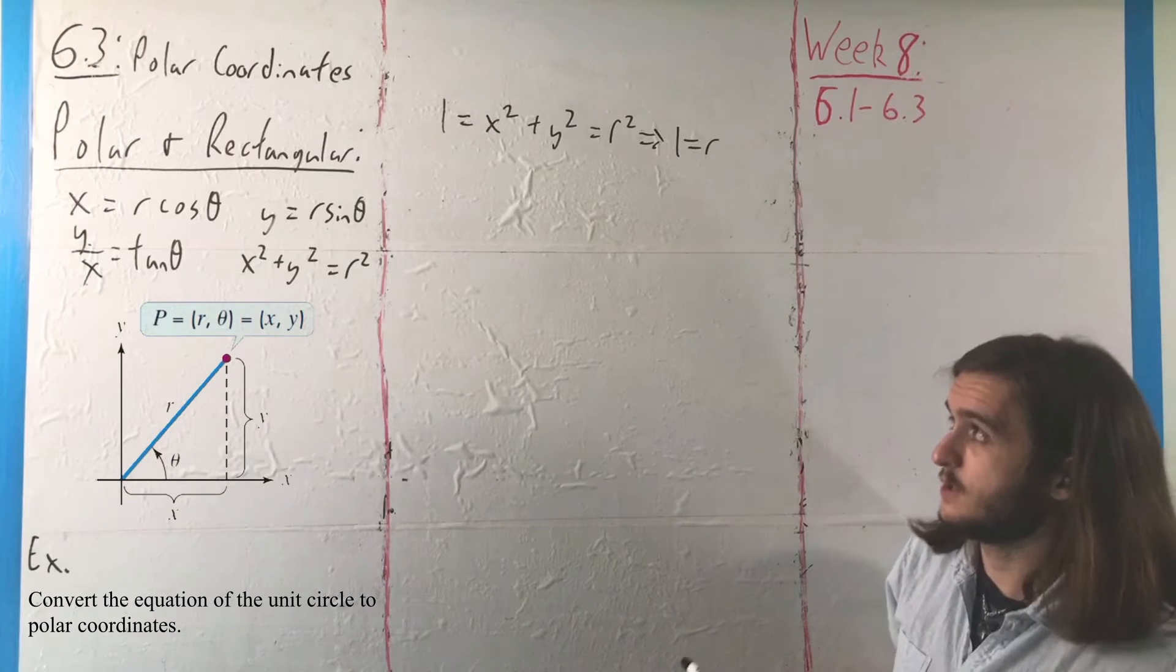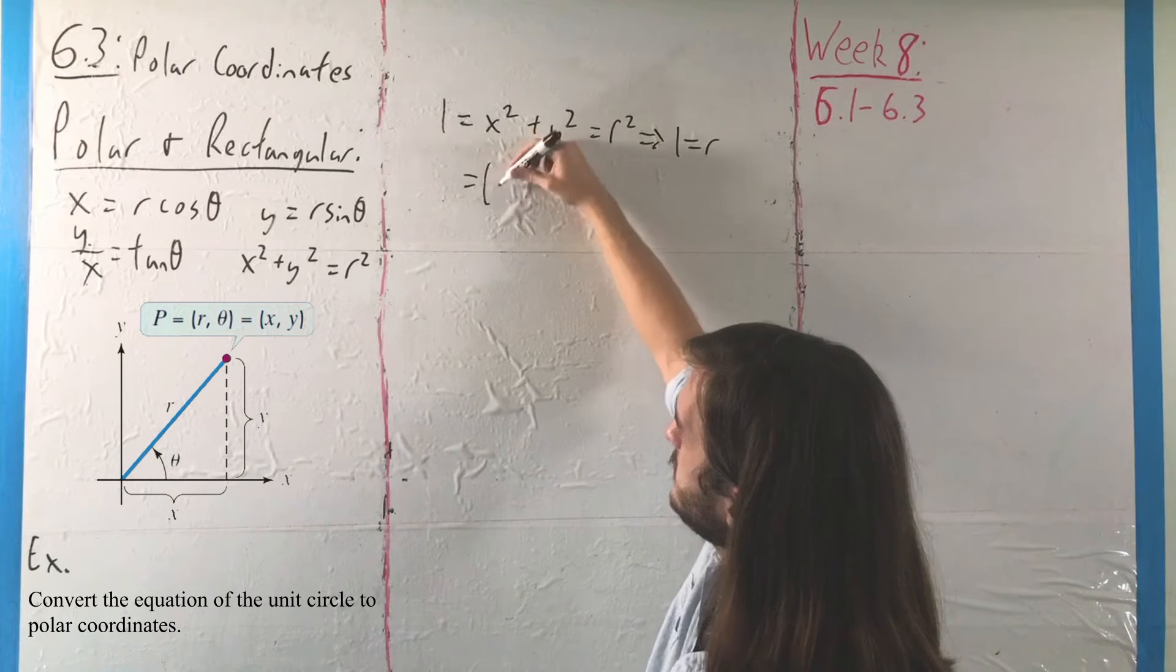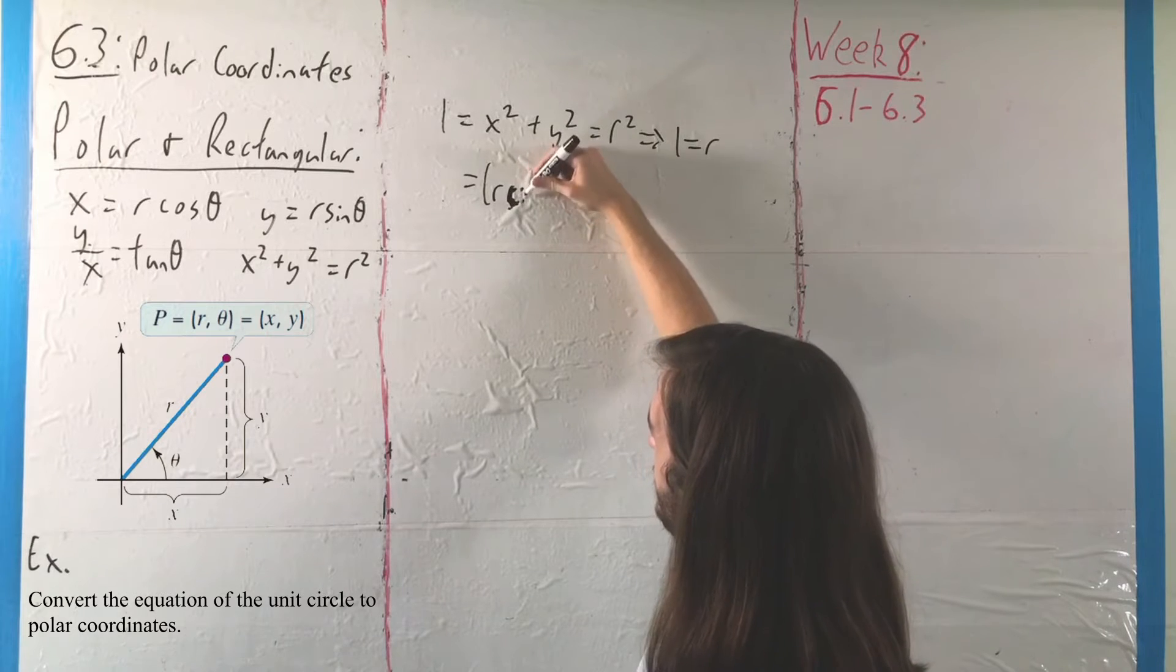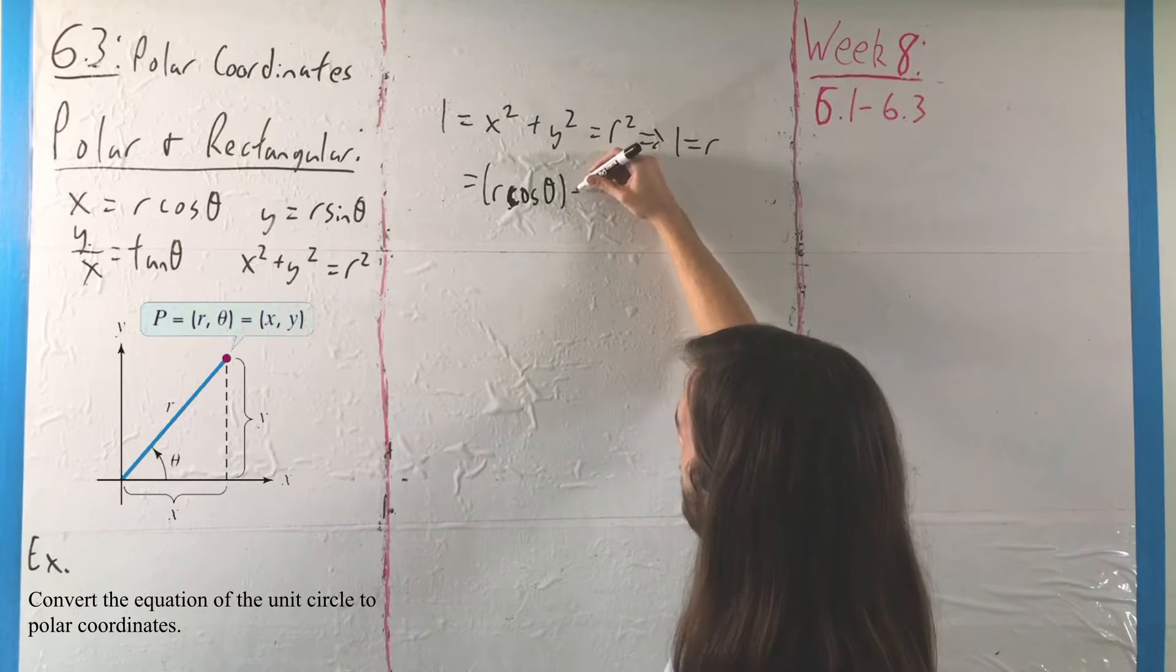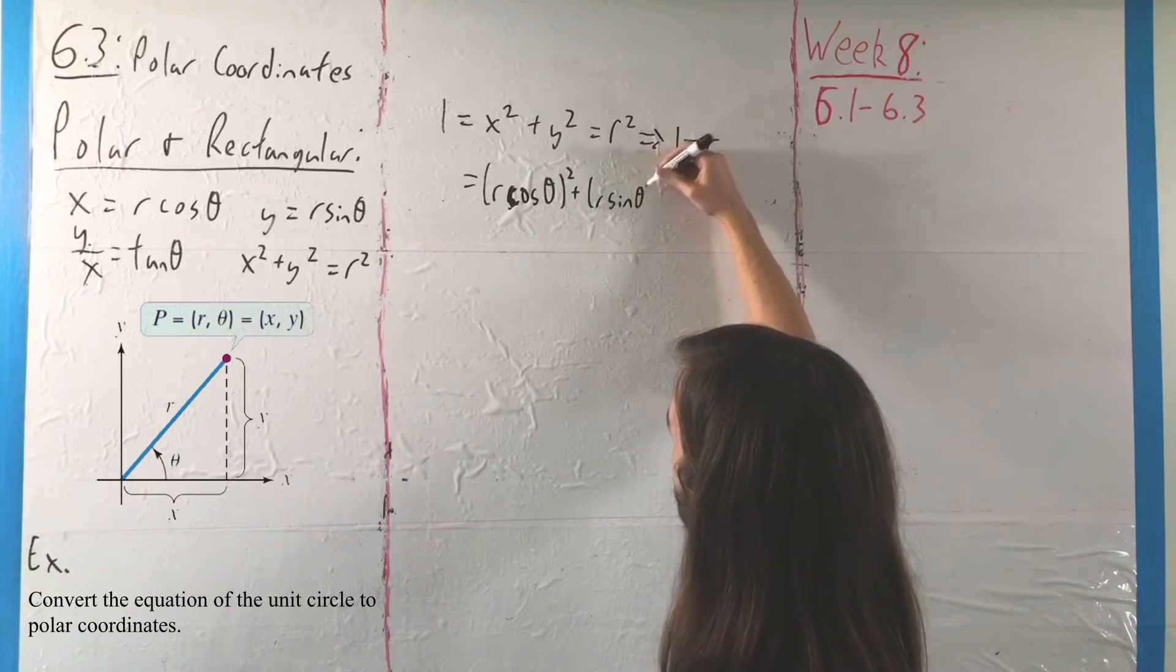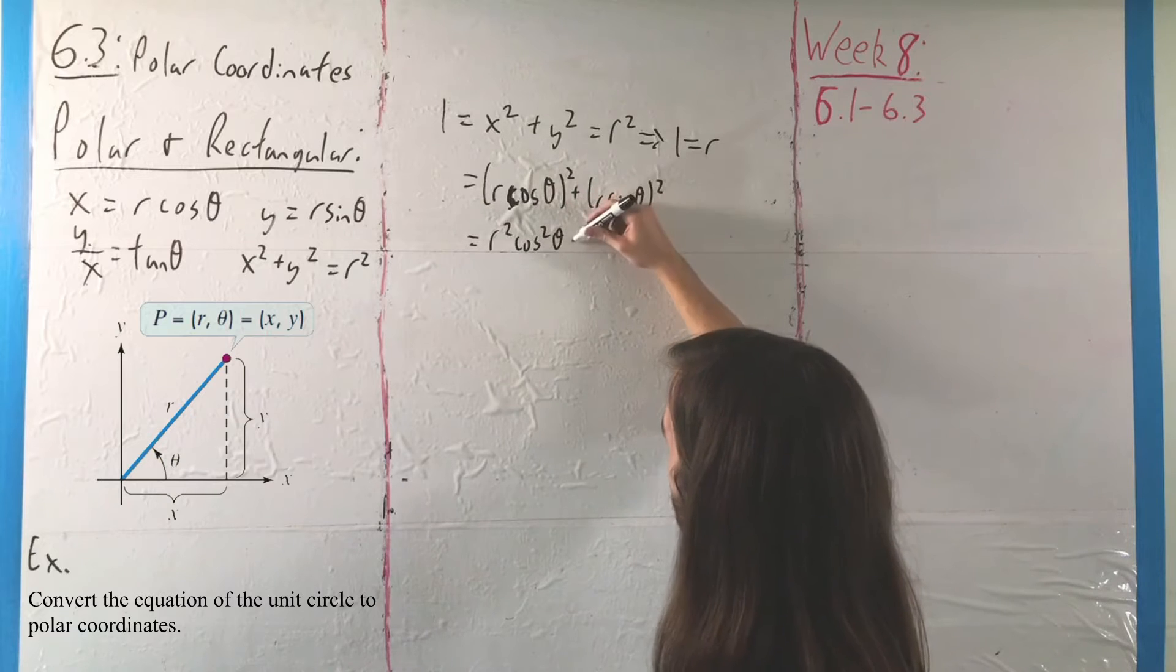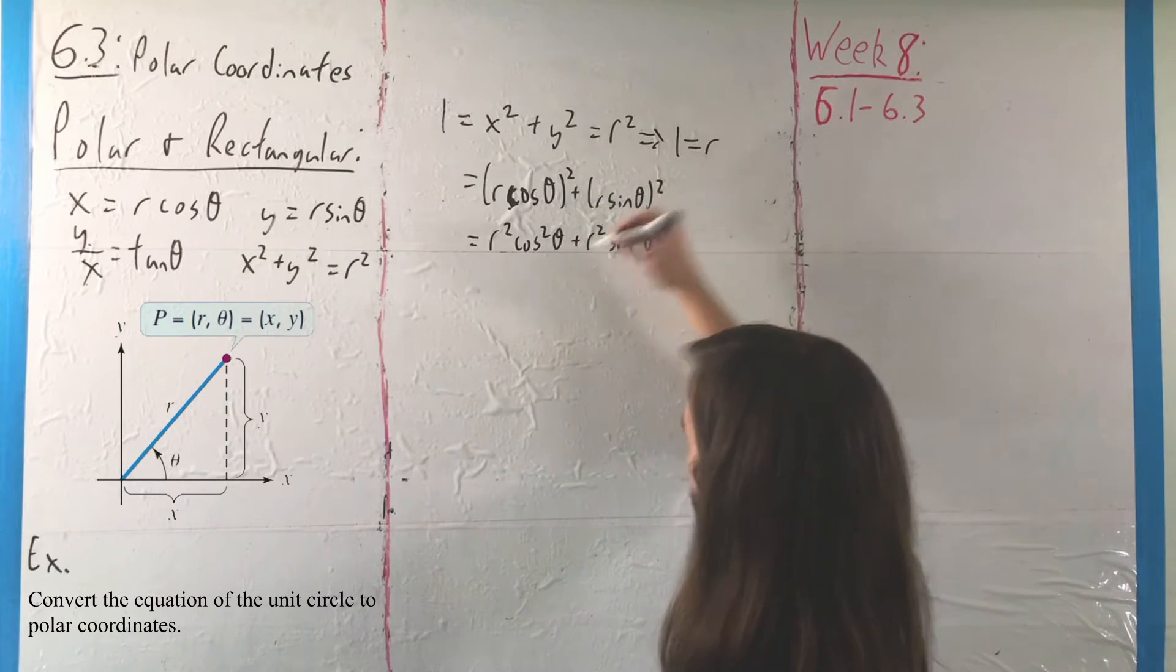Alternatively, if you want to take the long way, we could say that x is equal to R cosine theta, while y is equal to R sine theta, and we're squaring both of them. So we square those out. We get R squared cosine squared of theta plus R squared sine squared of theta.